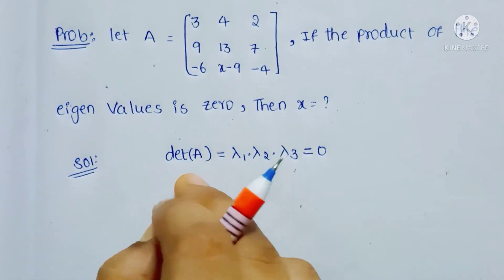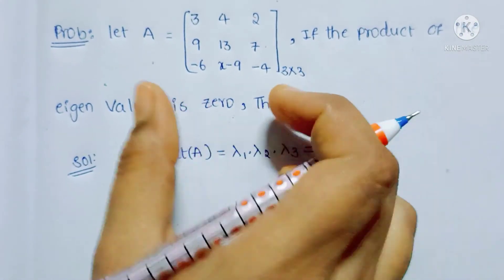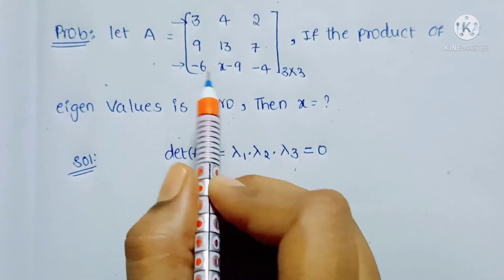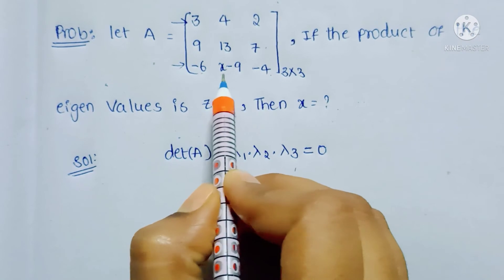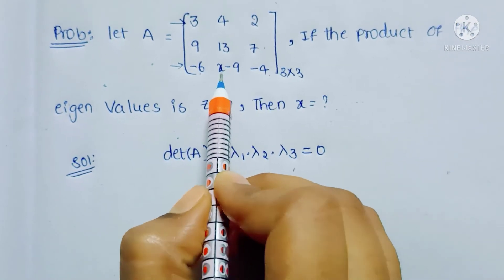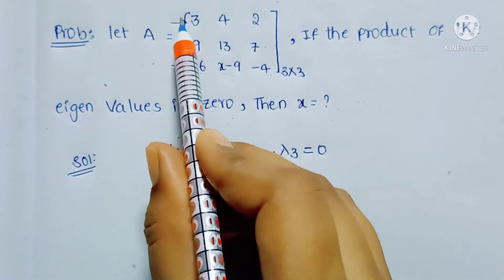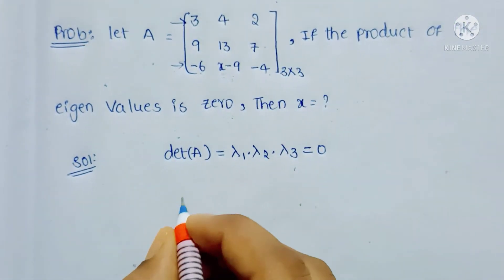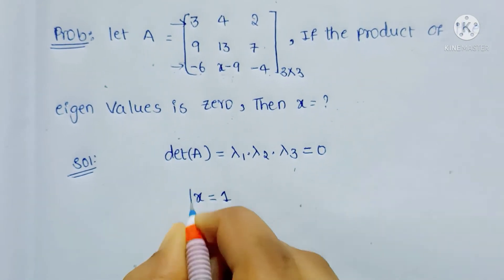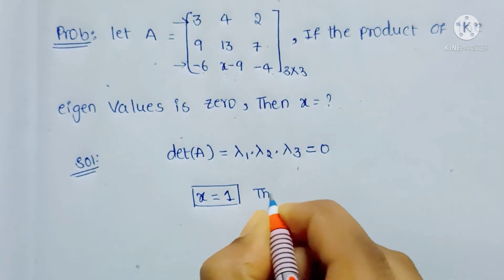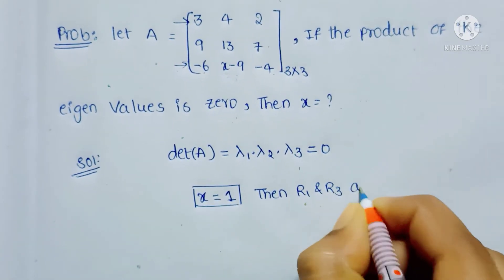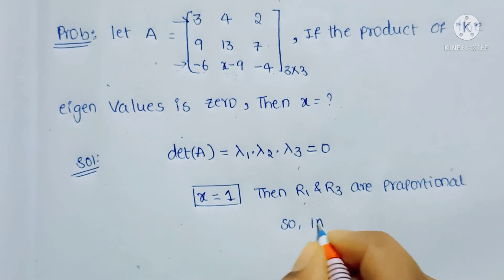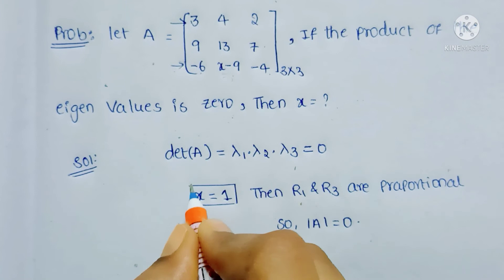To find the determinant of this 3 by 3 matrix, if you see, row 1 and row 3 are proportional. If we write x equal to 1, then here we get minus 8, and then row 1 and row 3 are proportional, which means the determinant of this matrix is 0. So directly we write x equal to 1, then row 1 and row 3 are proportional and the determinant equals 0. Therefore, the value of x is 1.